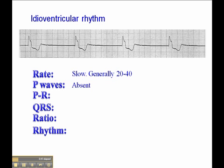P waves are absent in an idioventricular rhythm and consequently the PR interval is not applicable. The QRS is wide, always wide, so at least 0.12 second and typically closer to 0.14, 0.16 second.